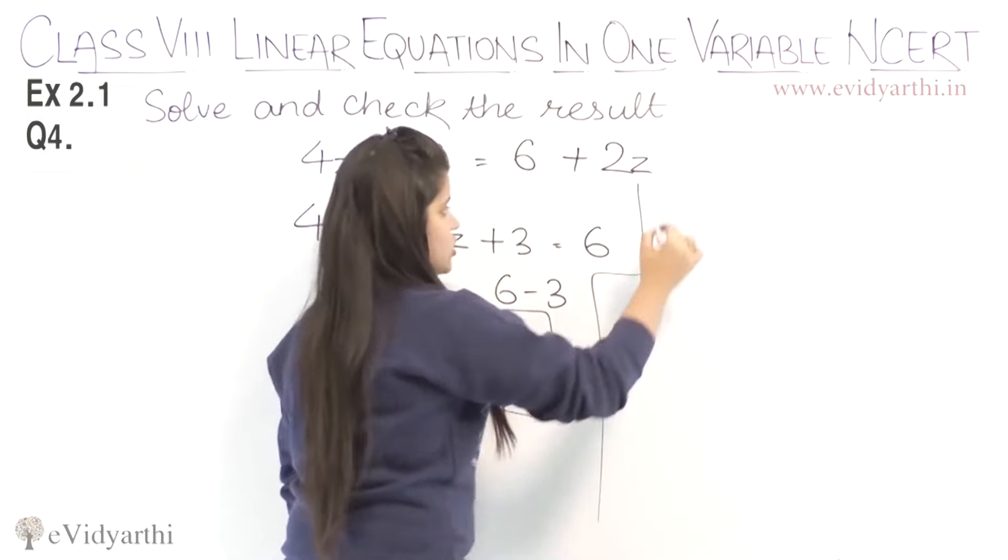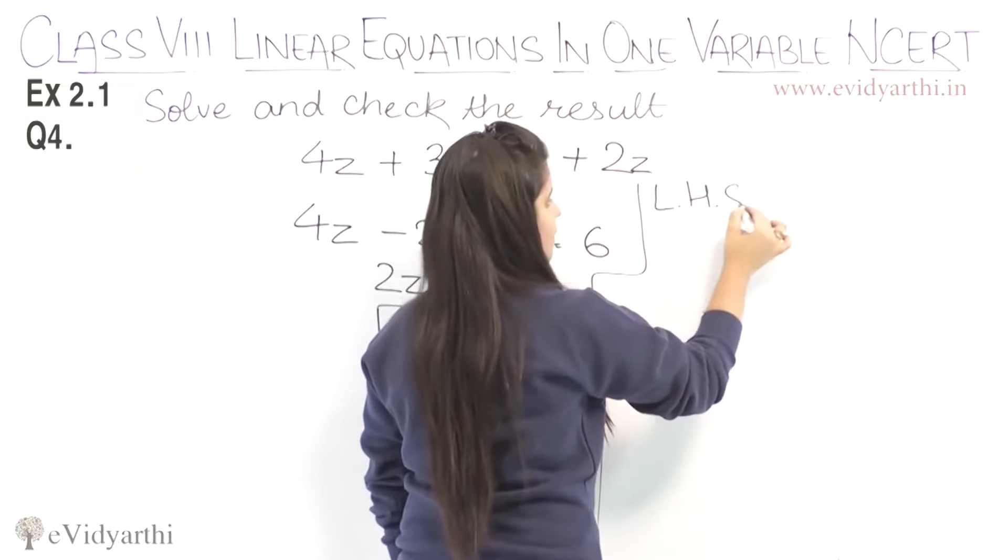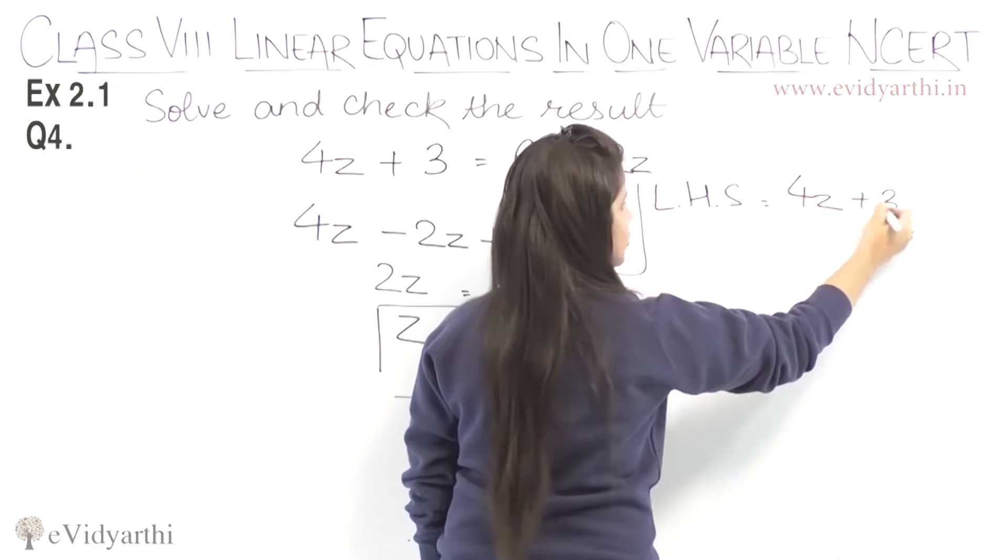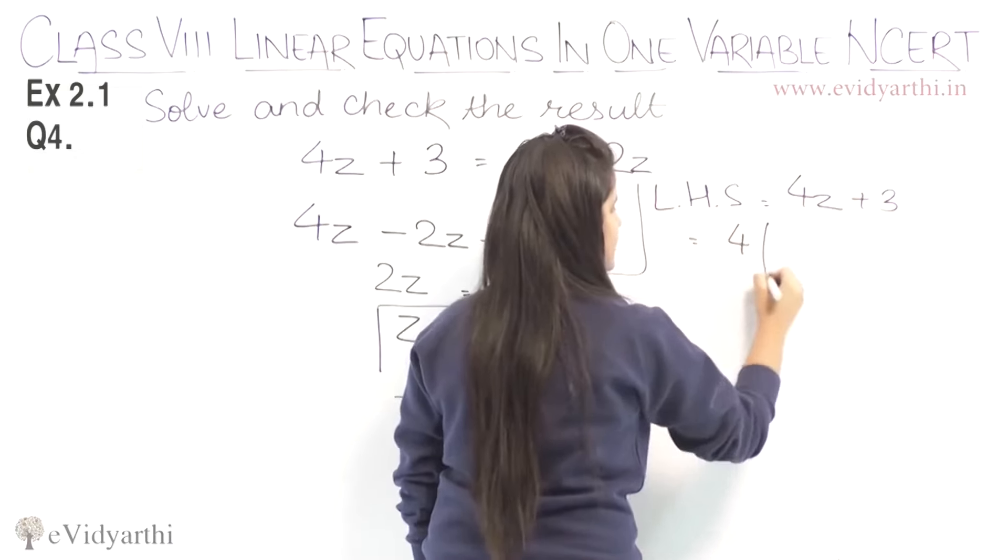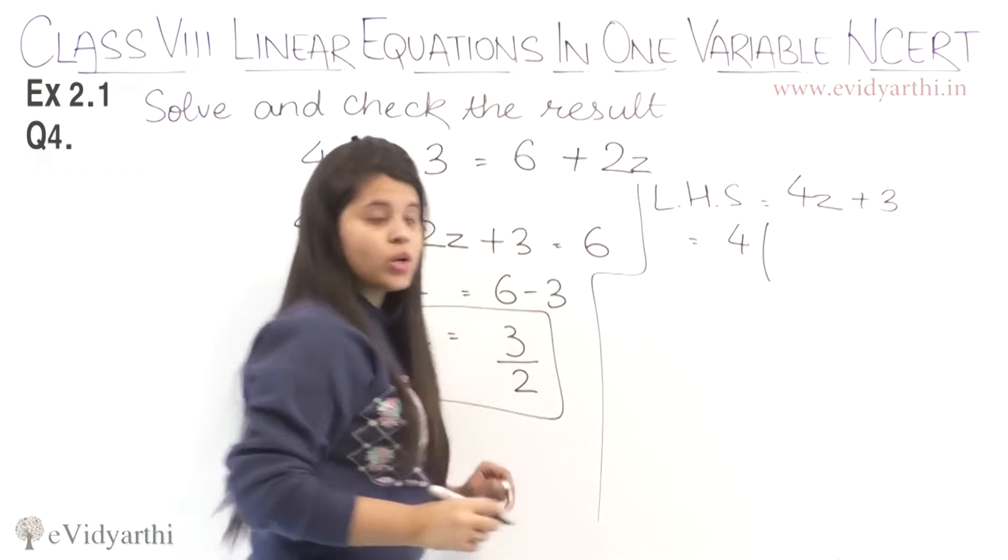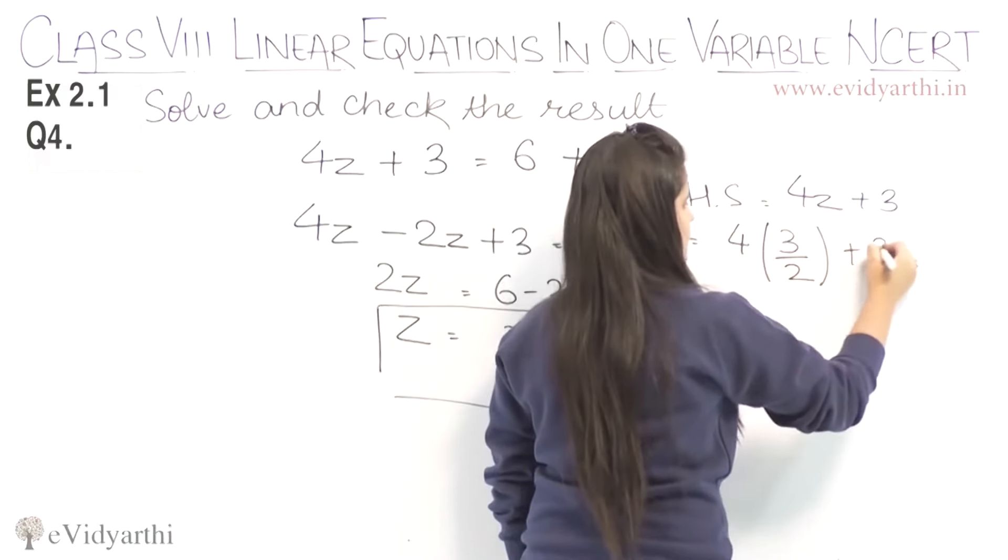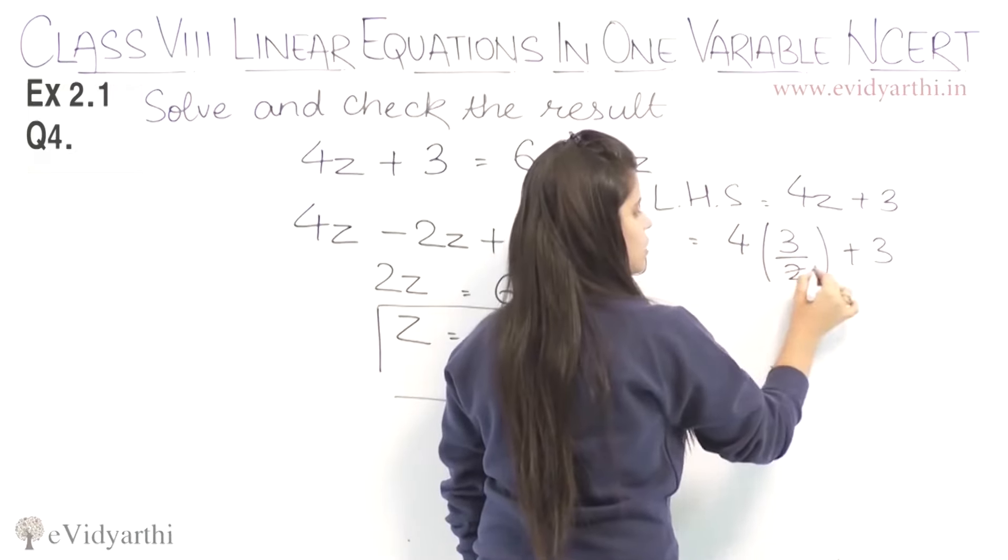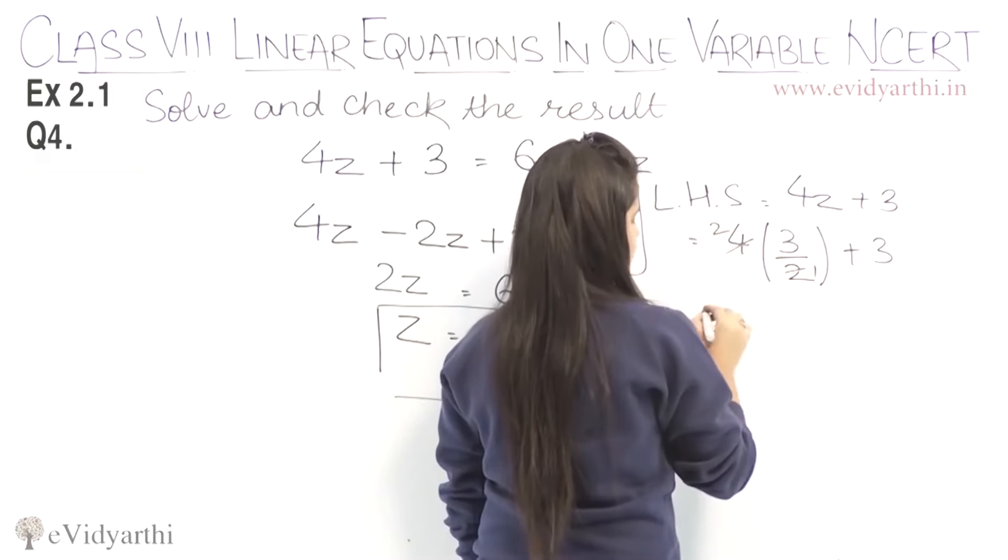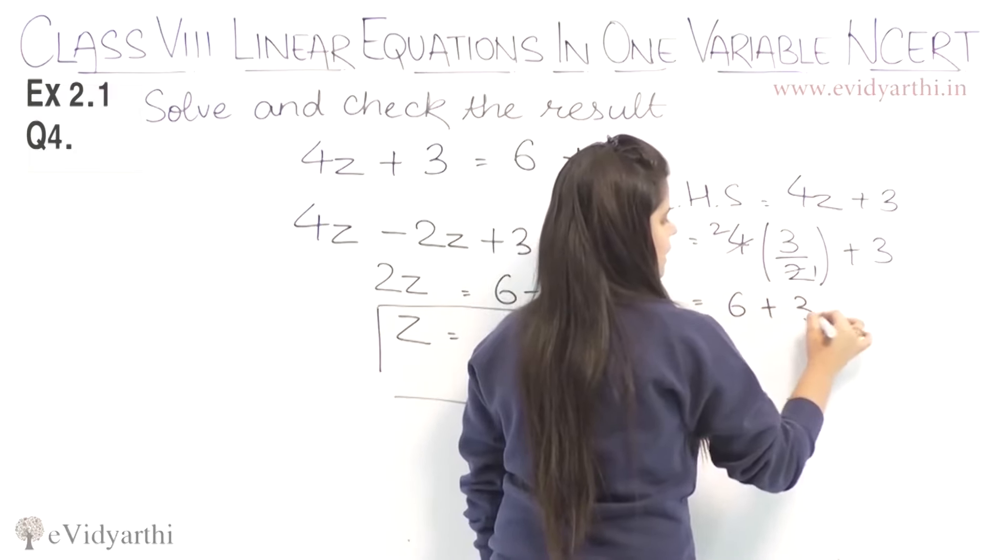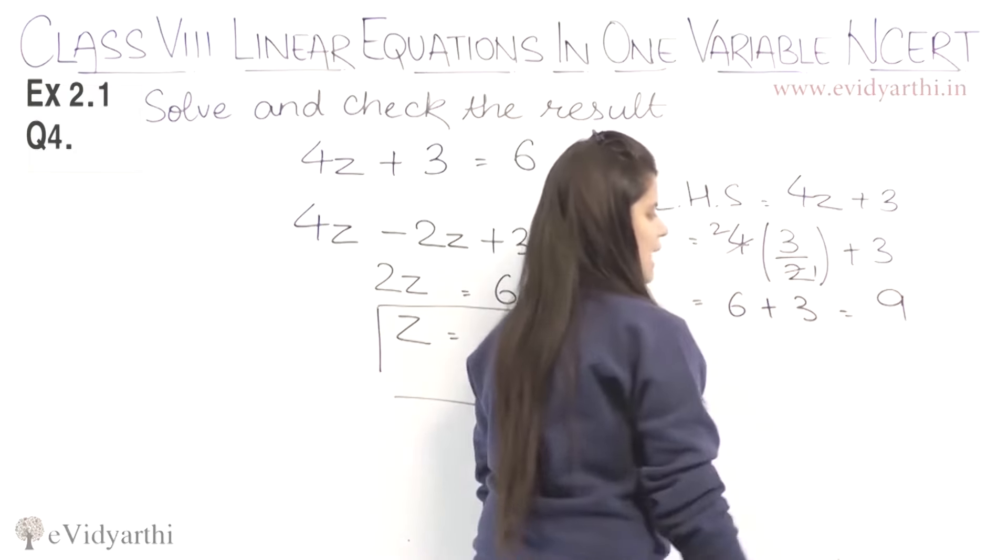Now, let's verify by substituting in the equation, starting with the left-hand side. We have 4z plus 3. Substituting z equals 3 upon 2: 4 times 3 upon 2 plus 3. 4 and 2 cancel, so 2 times 3 is 6, plus 3 equals 9.